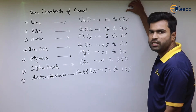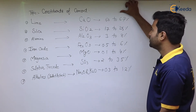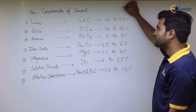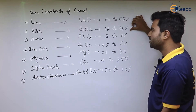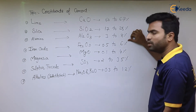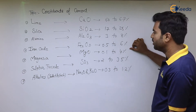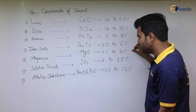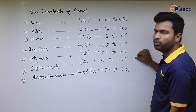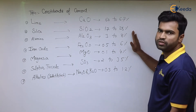The percentages in cement are: lime 60 to 67 percent (the highest), silica 17 to 25 percent, alumina 3 to 8 percent, iron oxide 0.5 to 6 percent, magnesia 0.1 to 4 percent, sulfur trioxide 2 to 3.5 percent, and alkalis 0.3 to 1.2 percent.